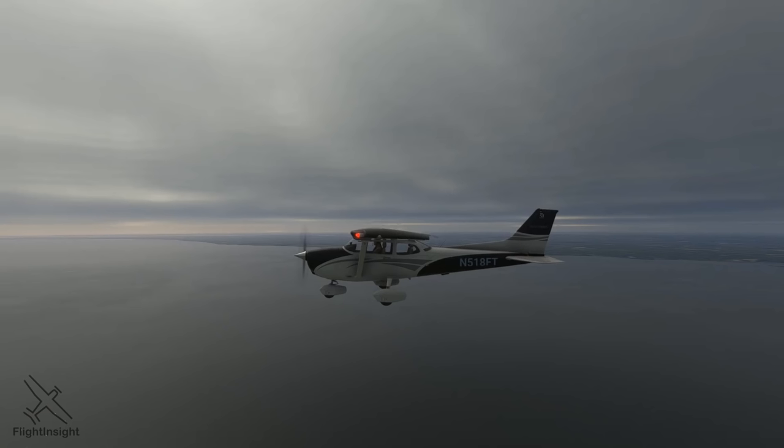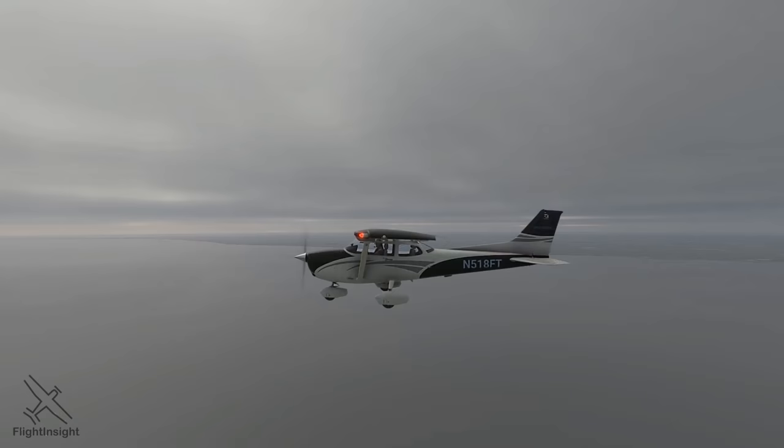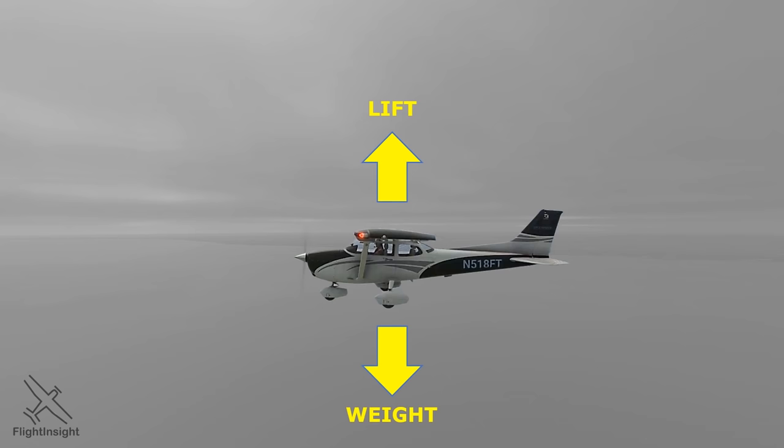We already know that when our aircraft is in straight and level, unaccelerated flight, the four forces acting on our aircraft are said to be in equilibrium. For example, our lift force moving upwards is equal to the weight force moving downwards. But it can be a bit vague thinking of these forces in general terms like this.